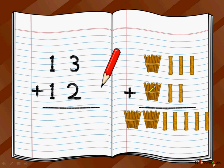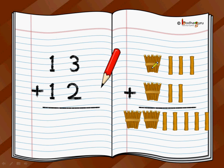And how many bundles? 1 bundle, 2 bundles. So we have drawn 1 bundle, 2 bundles. We had 13 sticks and got 12 more sticks. So we have a total of 2 bundles of 10 sticks each and 5 more loose sticks, which is 3 from here and 2 from here. So 3 plus 2 is 5, and 1 tens bundle and a second tens bundle are 2 tens bundles.